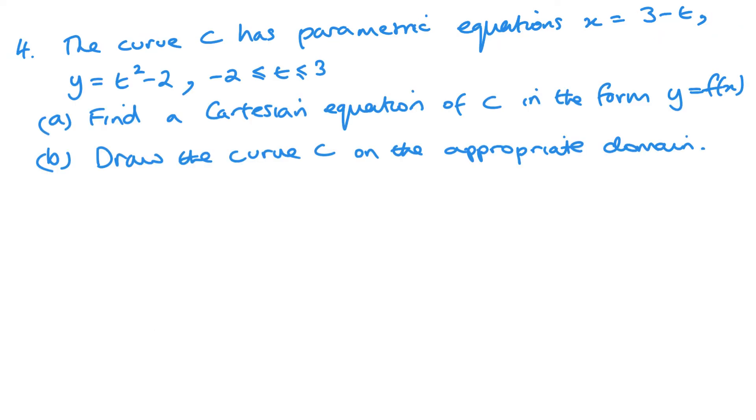So for this one, let's start off with a: we're going to find the Cartesian equation. So let's rearrange x. t is three minus t, so t is going to be 3 - x. And then I want to substitute that into y, so y = (3 - x)² - 2. Now this is obviously really useful for sketching our graph.